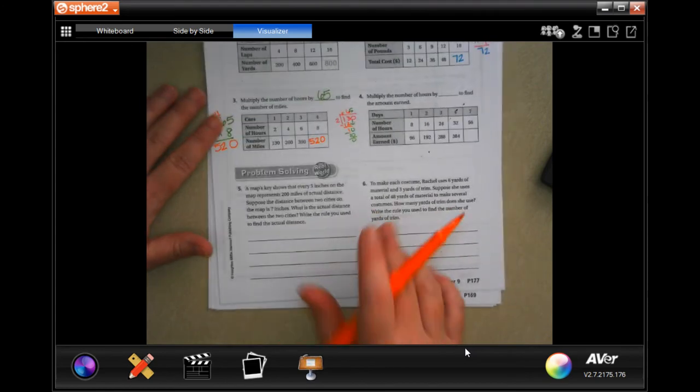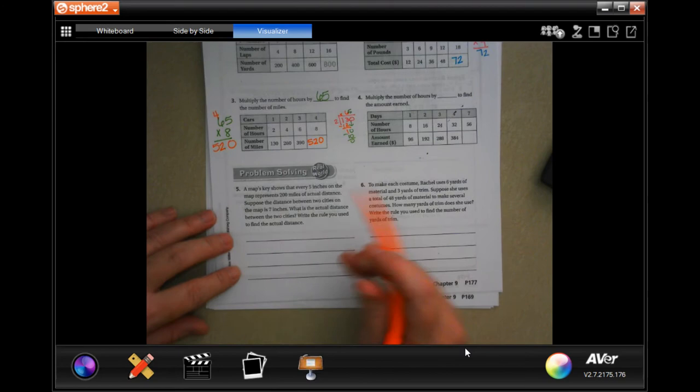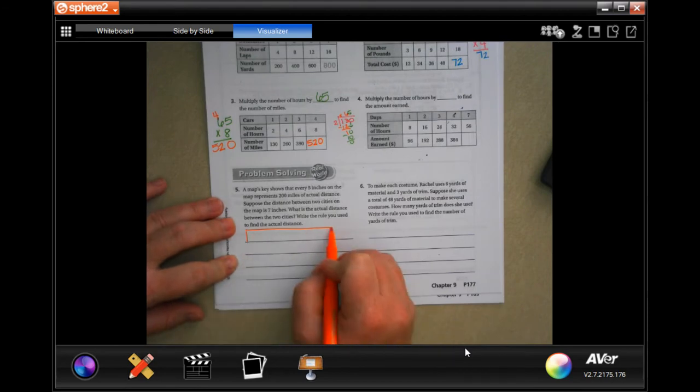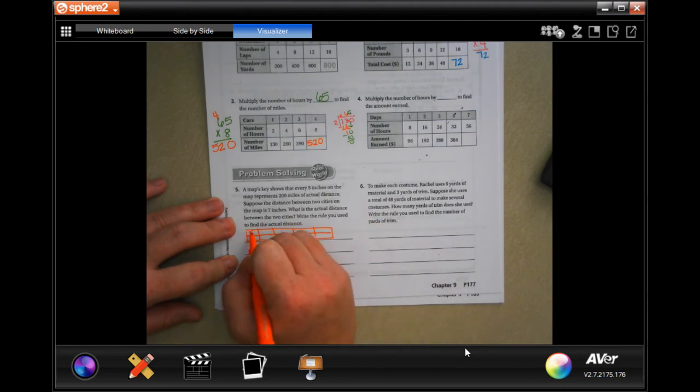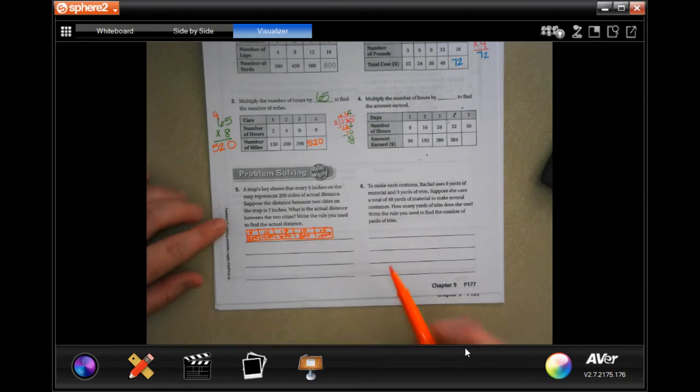Now on number five, it says a map key shows that every five inches on the map represents 200 miles. So if I made a chart, we would count by five, and it would go up by 200 each time: 200, 400, 600, 800, and 1000.